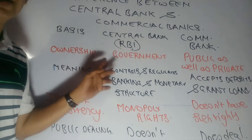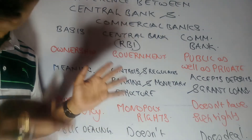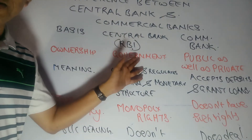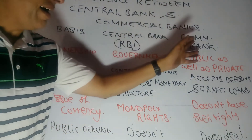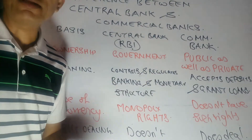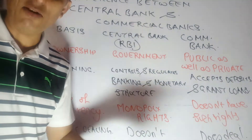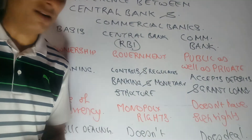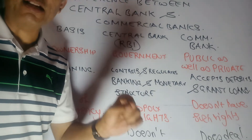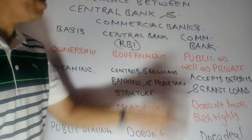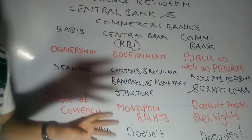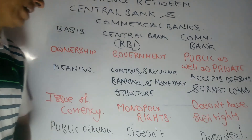Let's talk about the ownership part first. In every economy, generally it's the government that owns the central bank. As far as commercial bank is concerned, you find certain banks are under the public sector — that is government owned, where shares are owned by the government — and there are certain banks wherein private sector participation is there. So commercial bank has both public and private participation, while government ownership is there in case of central bank.